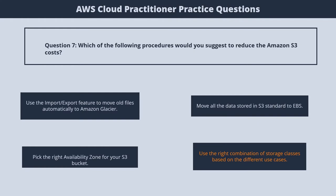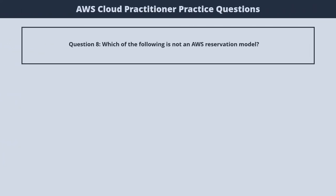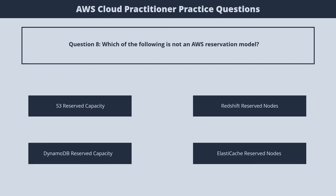Question 8. Which of the following is not an AWS Reservation Model? 1. S3 Reserved Capacity. 2. Redshift Reserved Nodes. 3. DynamoDB Reserved Capacity. 4. ElastiCache Reserved Nodes. The correct answer is 1. S3 Reserved Capacity.